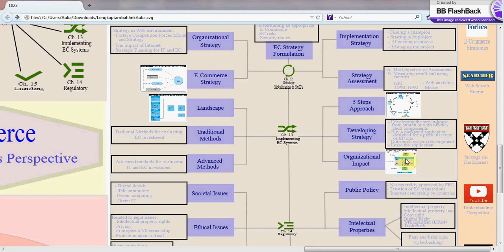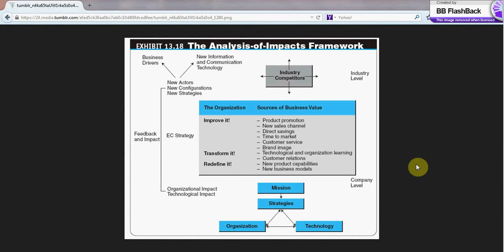Let's check organizational impact. This is what your organization has to do. You have to improve your product promotion, your sales channel, your direct savings, time to market, customer service, and your brand image. Besides improving your business value, you have to transform your business value. You have to transform technological and organizational learning, and consumer relations. And besides improve and transform, you need to redefine your product capabilities and your new business models. That's the analysis of impacts framework.